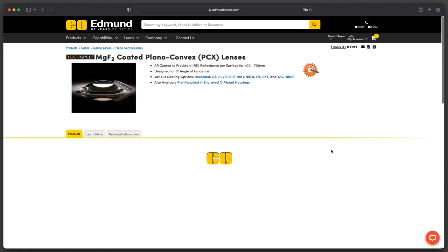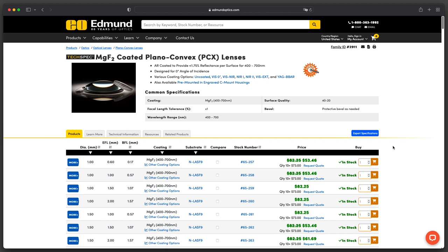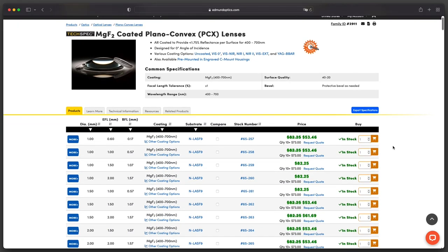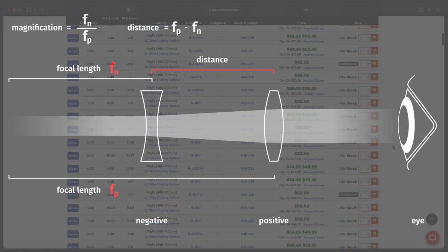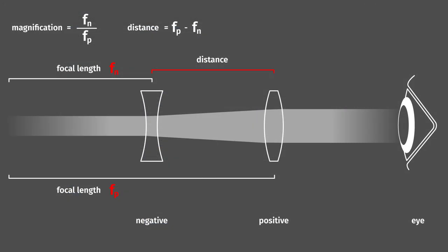Edmund Optics for example is pretty convenient. By picking something from the catalog, we make our life a lot easier. Because once we decided on the two required lenses, we just need to find the right distance between them. So it's less options and less variables to optimize for.